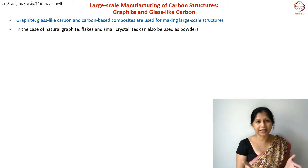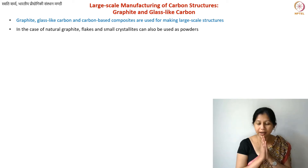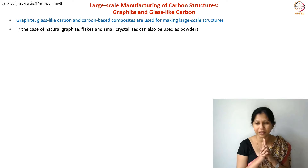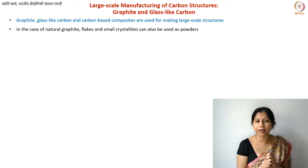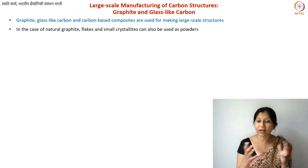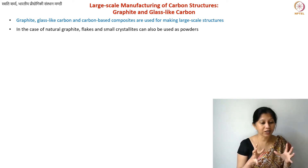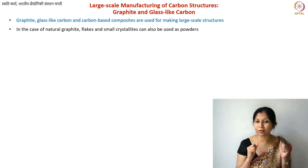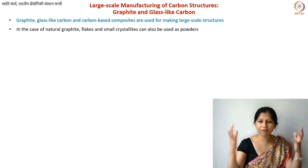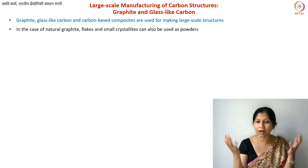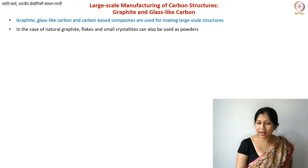So right now, first we will talk about the large-scale carbon materials — graphite and glassy carbon. Maybe in the next lecture I will discuss micro and nanoscale carbon materials. Graphite and glassy carbon are the materials used for making large-scale structures. I'm not talking about powder; I'm talking about giving shapes and making something — let's say a cylinder or some other shape. Primarily for this kind of purpose, we use graphite.